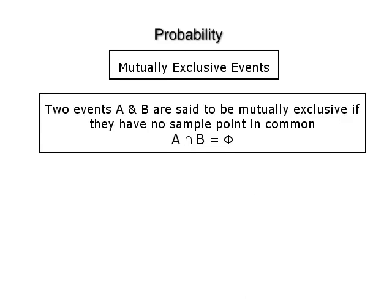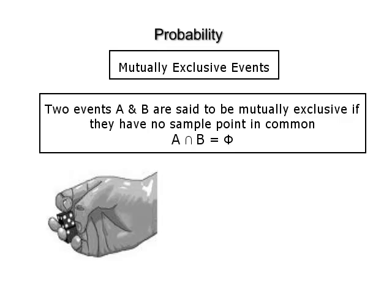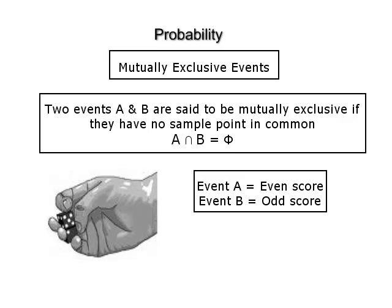Mutually exclusive events. Two events A and B of the sample space S are said to be mutually exclusive if they have no sample point in common, that is A ∩ B = φ. Consider the experiment of throwing a die. If A is the event of getting an even score and B is the event of getting an odd score, then clearly A ∩ B = φ, that is events A and B are mutually exclusive.